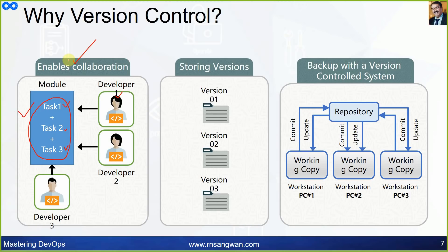Version control enables collaboration, storing multiple versions of the same file, and backup. With version control systems, working copies of the same file exist on PC 1, PC 2, and PC 3. Changes are committed to the repository and updates are pulled from the repository. This is why we need version control — to know who worked on what part of the project.